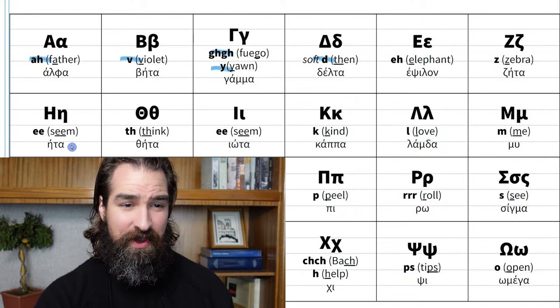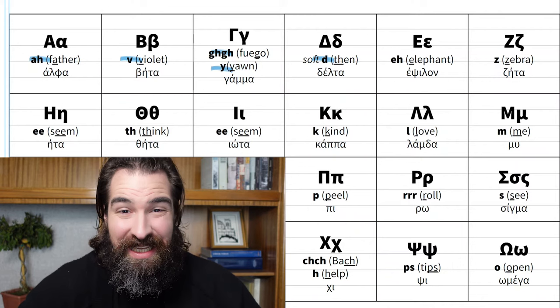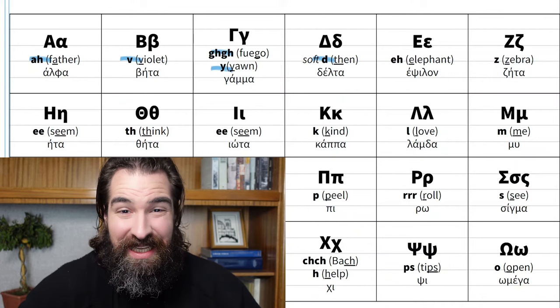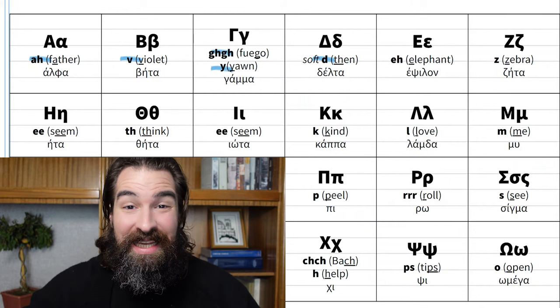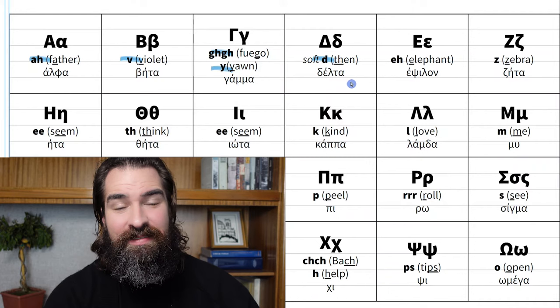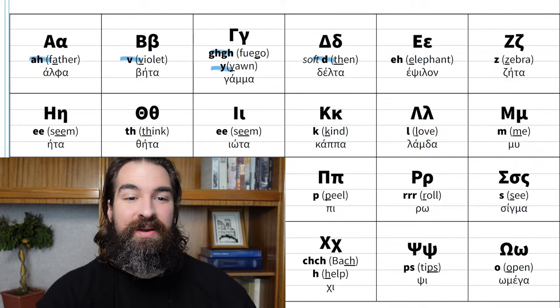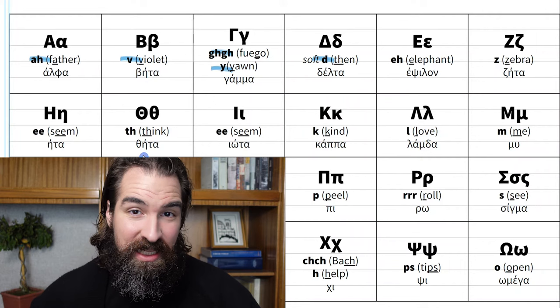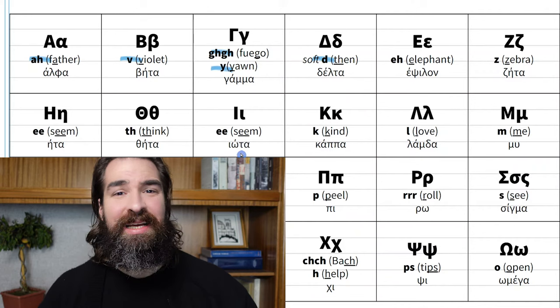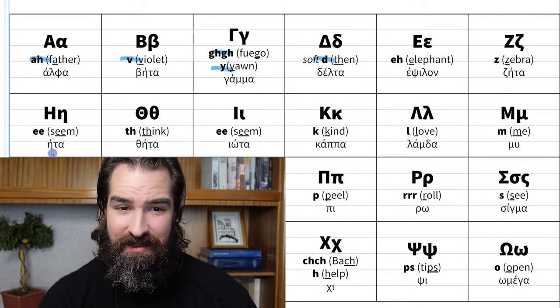The H-looking and N-looking thing is actually a vowel. This vowel makes a long E sound like in the word 'seem,' and it's called eta. Then we have theta — if delta is a soft D like 'then,' the theta is the true TH, like when we say 'think.' The letter name itself is pronounced 'theta.' Next we have iota, which looks like an I and also makes a long E sound, like 'seem.' It's called iota.